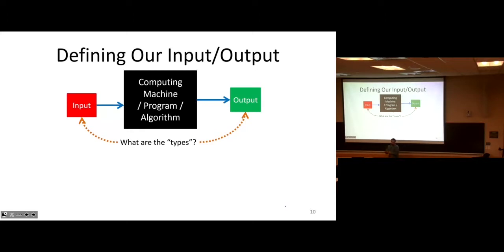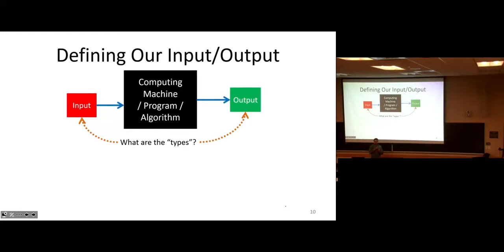We don't want to have a different theory for how we compute on sound waves versus images versus numbers. We want, ideally, some theory of computation that's going to work for all of those. We want to figure out what the types of these things should be so that when we're talking about computing, that applies whether the type refers to an image or a number. We want a sort of superclass of all of these things.